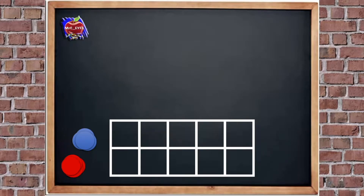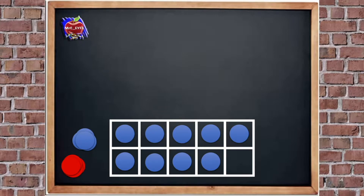Let's have another go. How many counters do we have now? Remember, we're counting on from five. Let's check: there's five, six, seven, eight, nine. Nine counters. Good job.